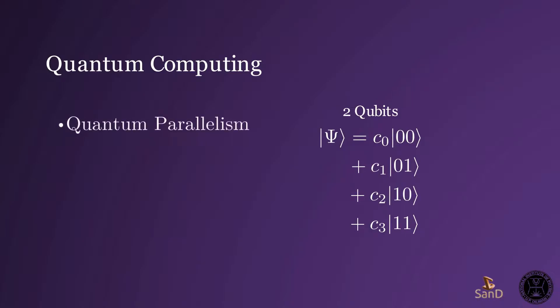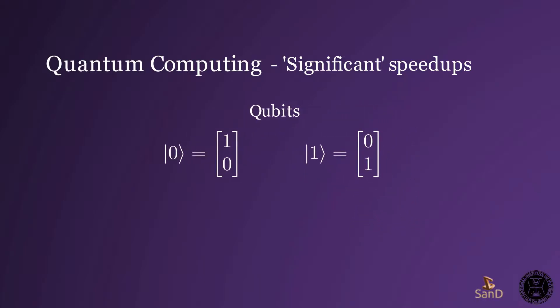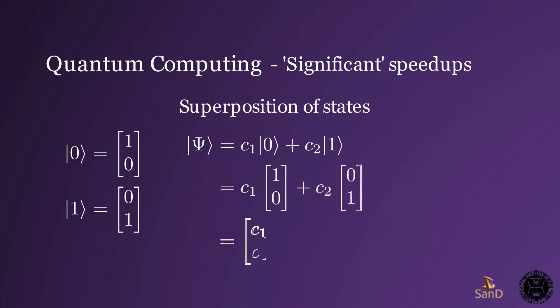This is known as quantum parallelism, which along with entanglement and interference, provide the basis for significant speed-ups. Mathematically, they are represented by vectors in ket0 and ket1, where the superposition is just a matter of matrix algebra.